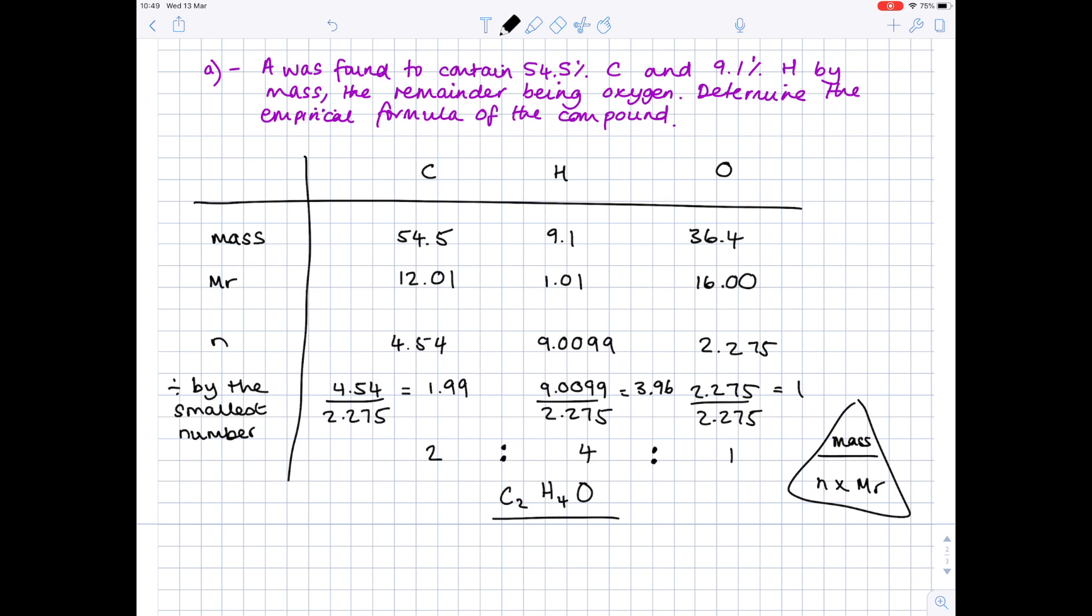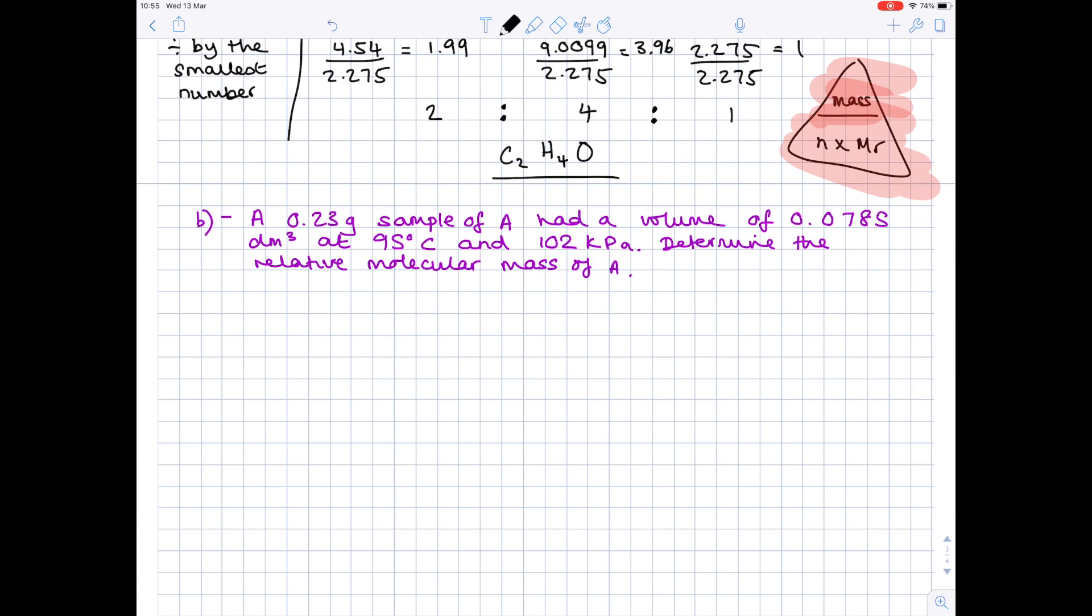Therefore your empirical formula is C2H4O. So part A is done. In the second part of the question, a 0.23 gram sample of A had a volume of 0.0785 decimetres cubed at 95 degrees Celsius and 102 kPa. Determine the relative molecular mass of A. Even if you don't know how to find the relative molecular mass, have a look at the numbers you've been given, and hopefully they'll be screaming the ideal gas equation at you.